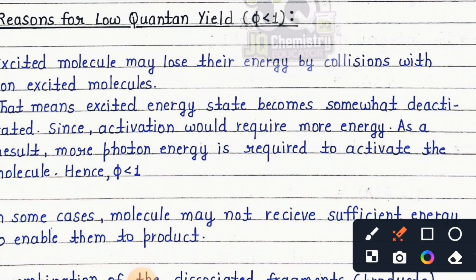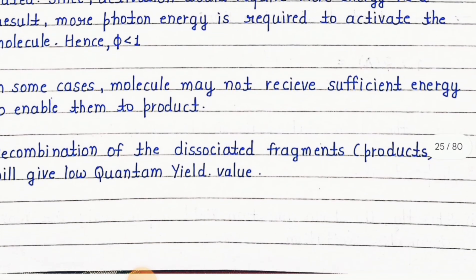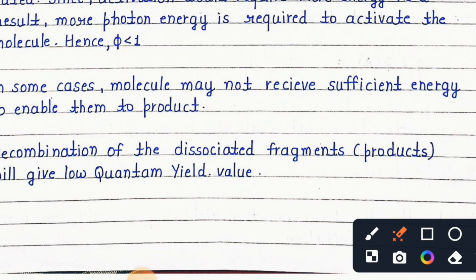Hence φ is less than one. In some cases, molecules may not receive sufficient energy to enable them to react. Recombination of the dissociated fragment products will give low quantum yield values.